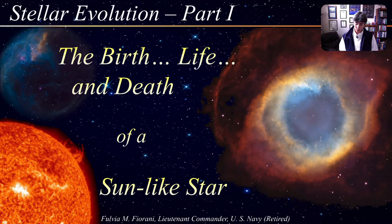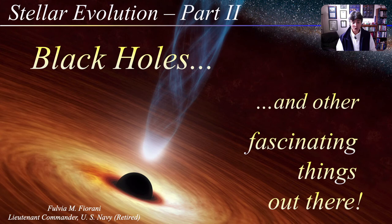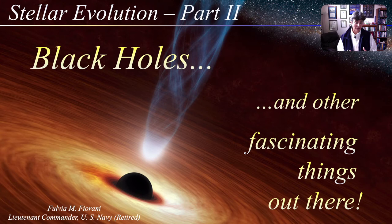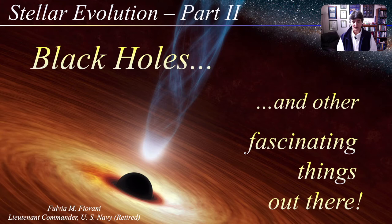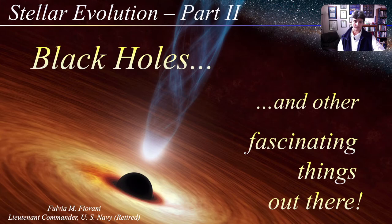Stars such as our Sun can produce elements up to carbon in their cores. But to produce heavier elements, we need more massive stars. In Part 2, we will see how these massive stars produce heavier elements in their cores, and then die a very violent death in a massive explosion known as a supernova, dispersing all the elements produced within their cores — and the elements beyond iron produced during the explosion itself — into the surrounding environment, seeding the universe with the elements that form future stars, planetary systems, and indeed all the elements required for life on Earth. The stellar corpses left over from these supernova explosions are neutron stars, pulsars, and of course black holes, which are ultimately the focus of this lecture.